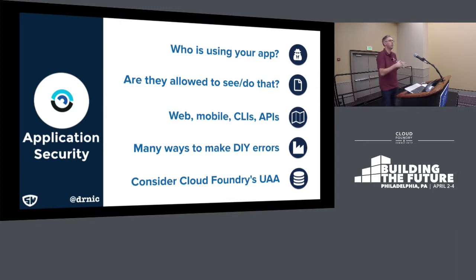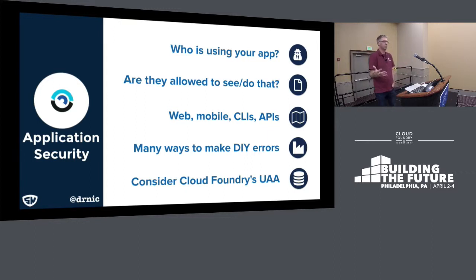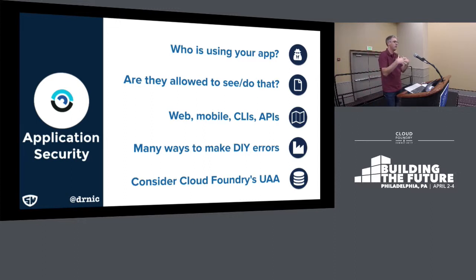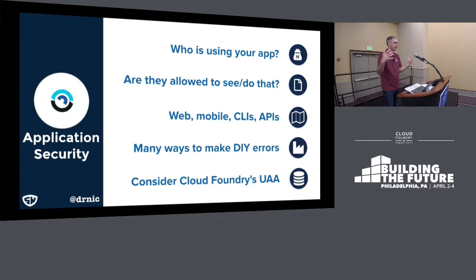Why you might want to run your own UAA is hopefully interesting to the people who have decided they would like to find out how to run it. If you've got an app, at some point you're going to have users that are not you, and you'd like to know which user is which. To build all that authentication and authorization into your app is functionality that will either be duplicated across your other apps, or someone's going to say we need to extract that out into our Active Directory system. At some point you're going to wish you hadn't invested that time unnecessarily.